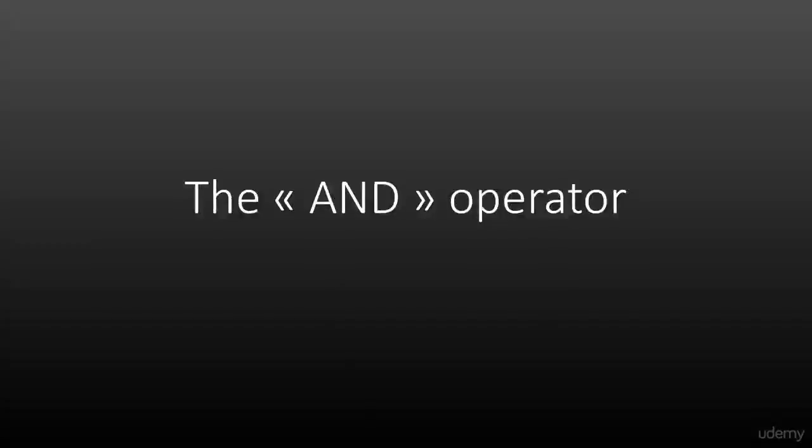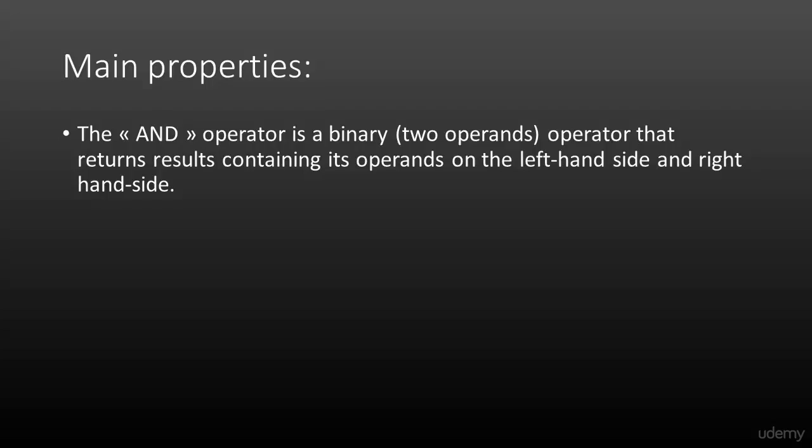Welcome to the lecture on the AND operator. The AND operator is a binary operator, meaning that it takes two operands. What it will do is return results that contain those two operands.